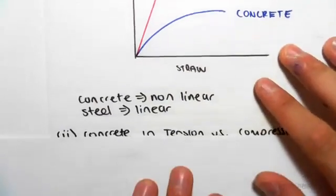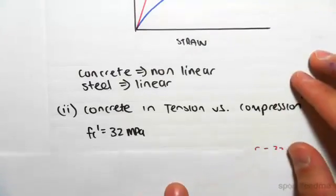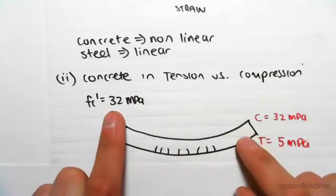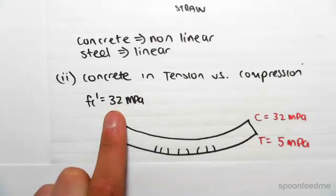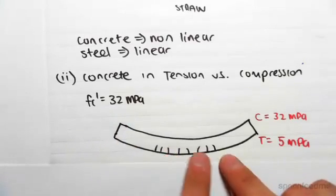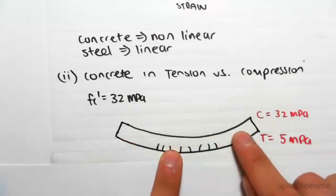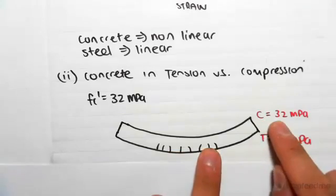The second thing we're going to talk about is concrete in tension versus compression. Say if we have a beam bending like this and we have a characteristic strength of 32 MPa, so this would just be the strength given to you by the concrete maker. He would say the concrete strength is 32 MPa. Now when we put that beam into bending like this, say the concrete is going to have different properties of compression and tension.